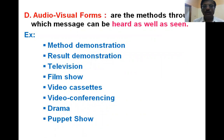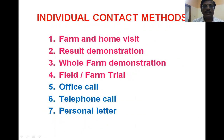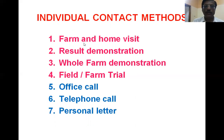Now let us see individual contact methods in detail. There are seven individual contact methods, but only the first four are included in your syllabus for detailed discussion. Individual contact methods are the methods used to communicate with farmers individually, either at their field or at their home. These methods are: farm and home visit, result demonstration, whole farm demonstration, farm trial or field trial, office call, telephone call, and personal letters.